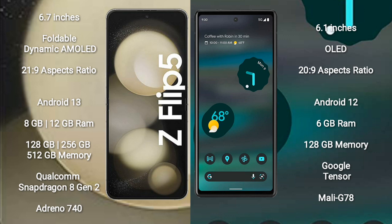Samsung Galaxy Z Flip 5 comes with 8GB or 12GB RAM and 128GB, 256GB, or 512GB internal storage, powered by the Qualcomm Snapdragon 8 Gen 2 processor and GPU Adreno 740. Google Pixel 6a comes with 6GB RAM and 128GB internal storage, powered by the Google Tensor processor and GPU Mali-G78.